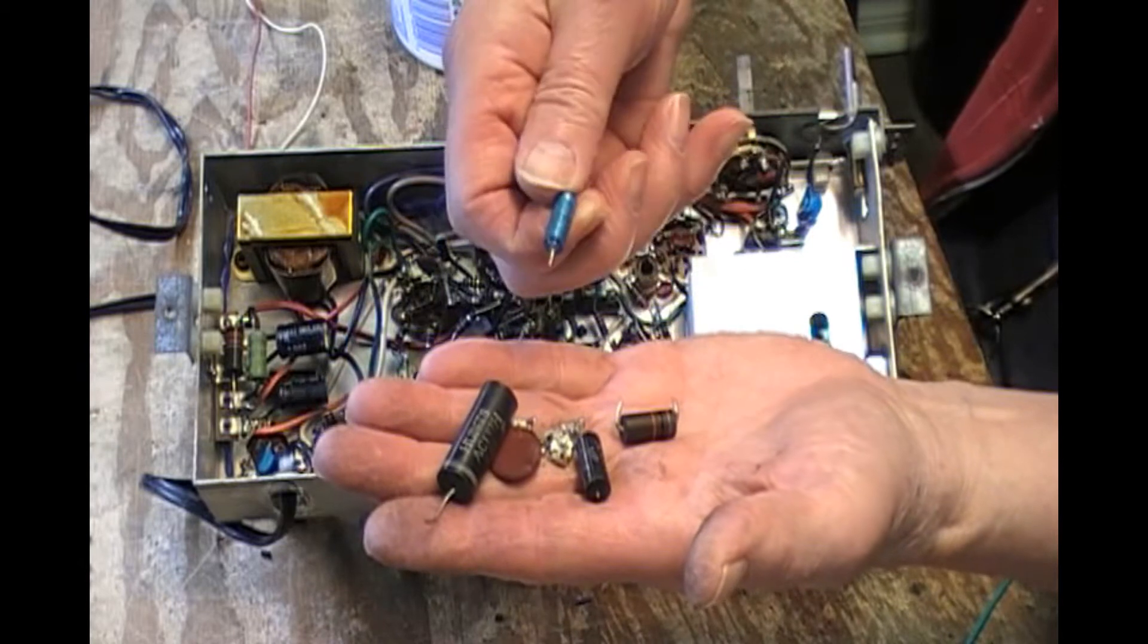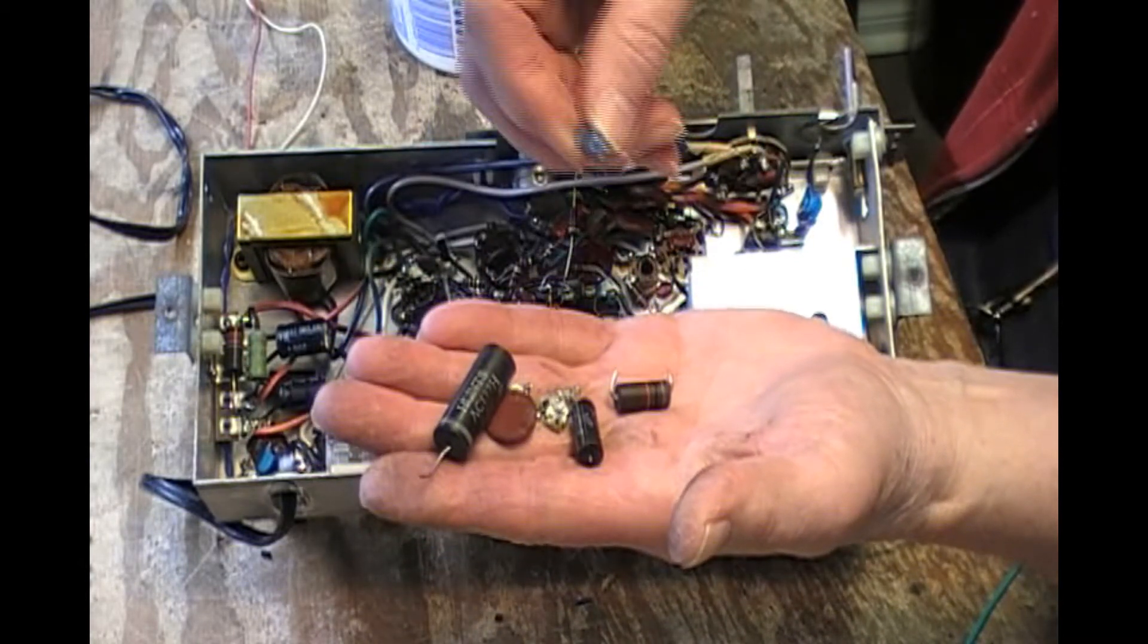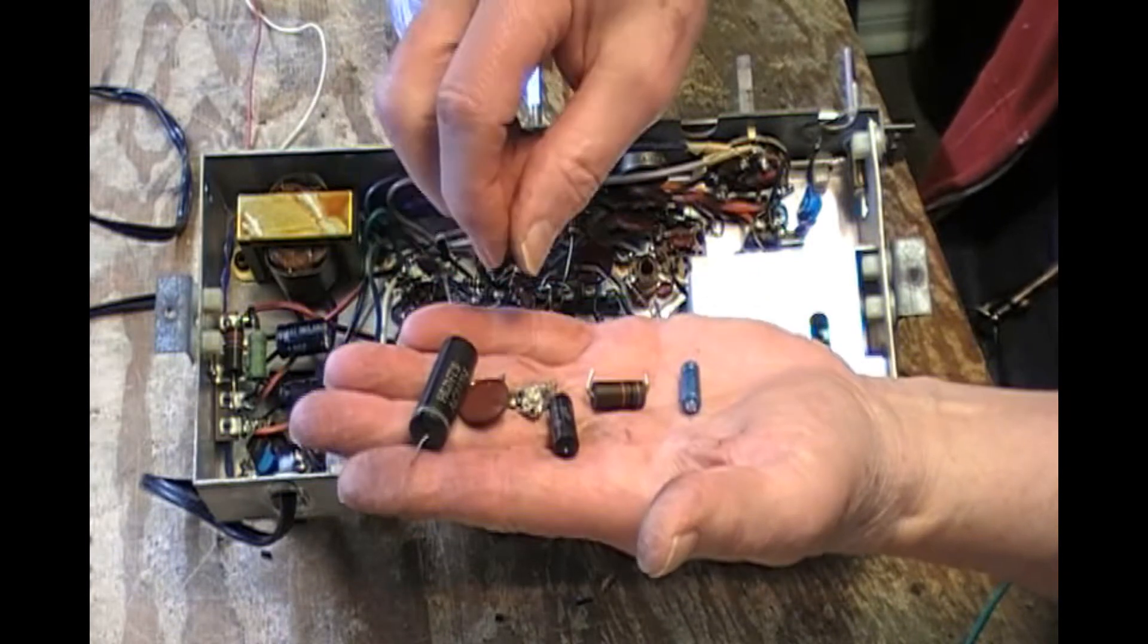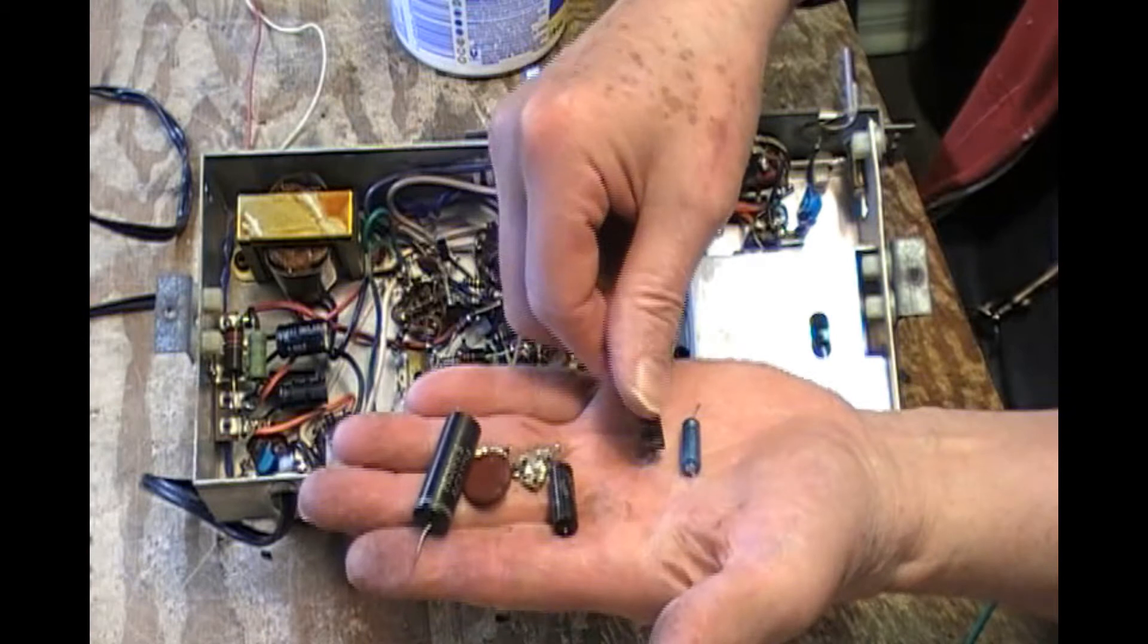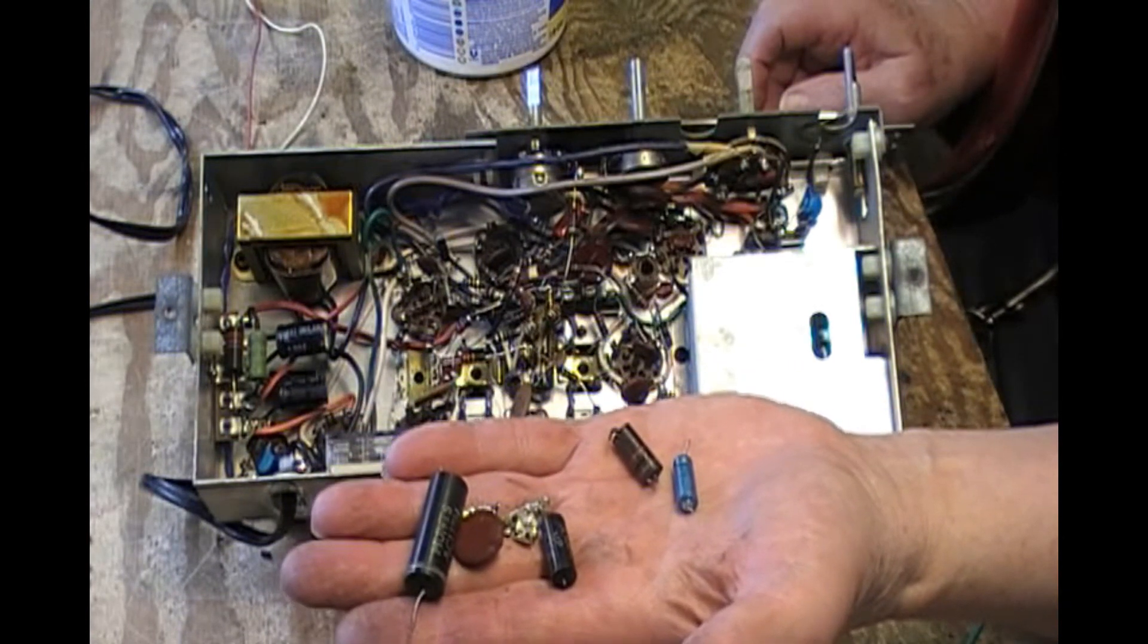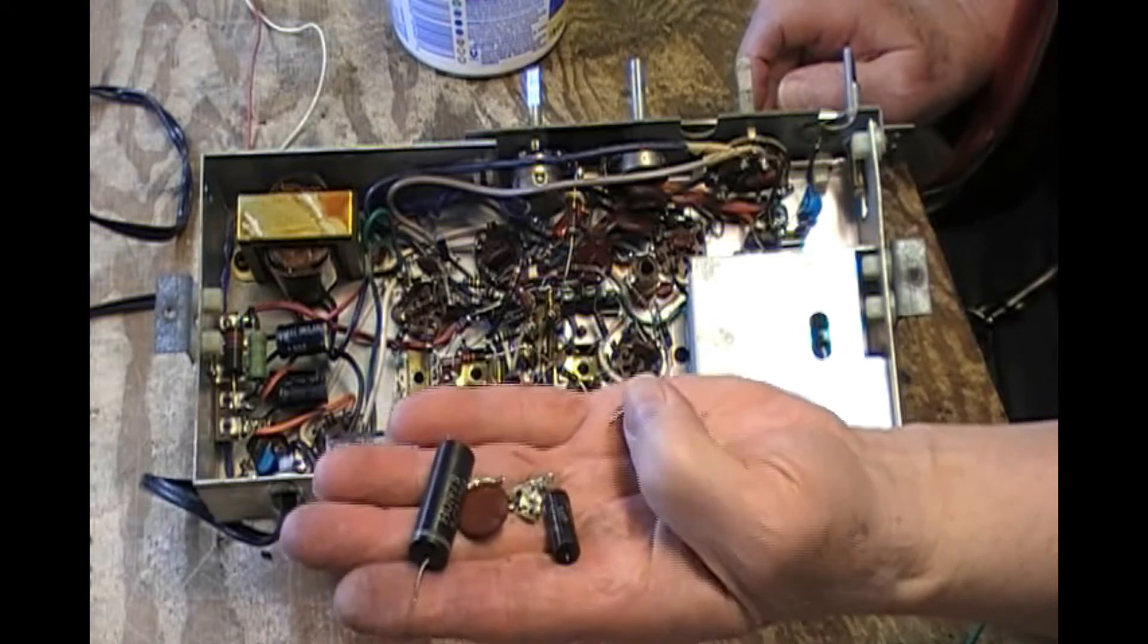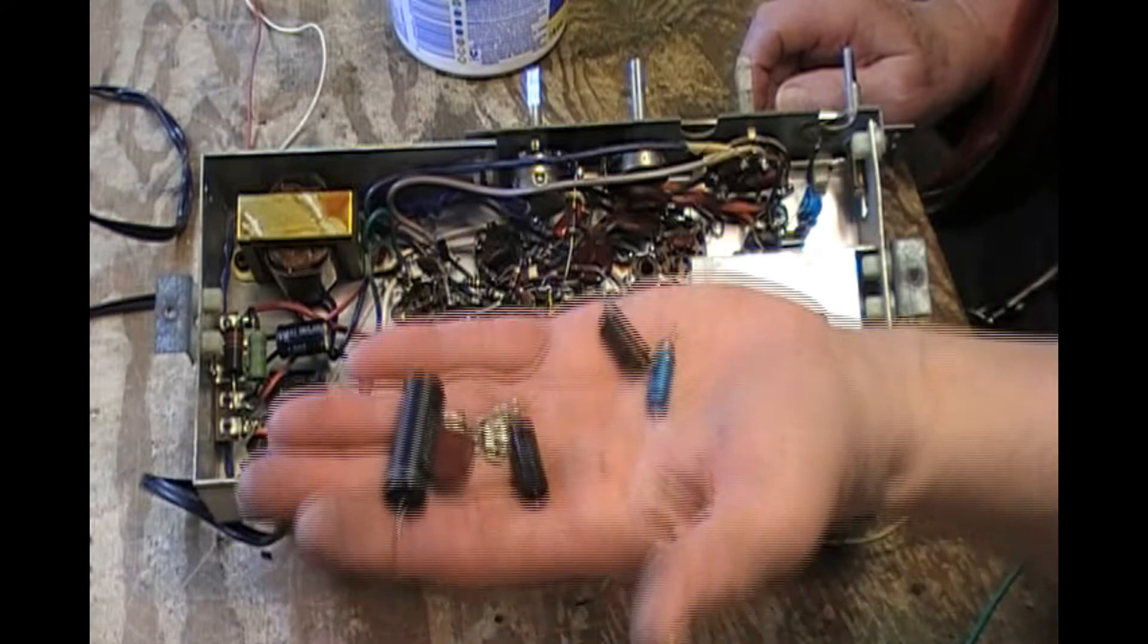the ratio detector filter capacitor, if that's what you call it, and a resistor that was fine, except that when I took it off the filter capacitor lugs, it was too short to use. So I replaced it.